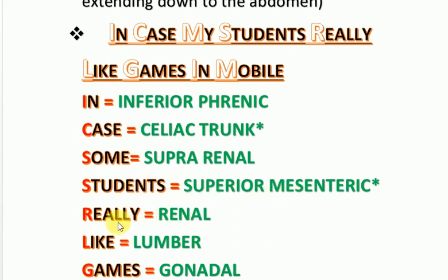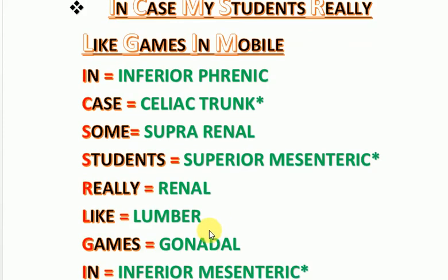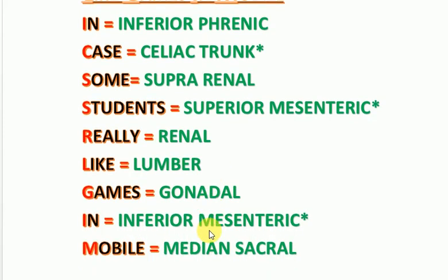Continuing the mnemonic: 'Really' is for renal arteries, 'Like' is for lumbar arteries, 'Games' is for gonadal arteries, 'In' is for inferior mesenteric artery, and 'Mobile' is for median sacral artery.